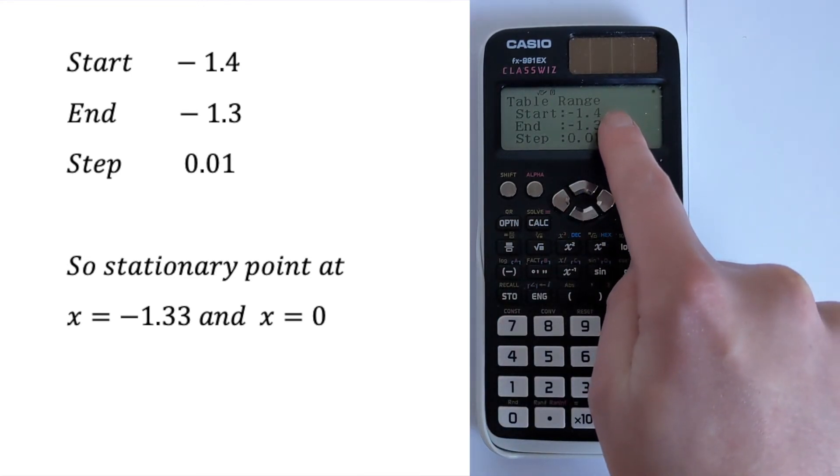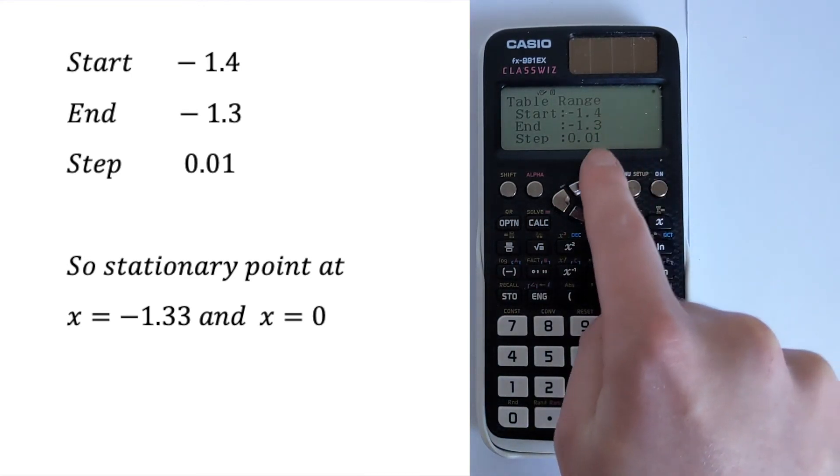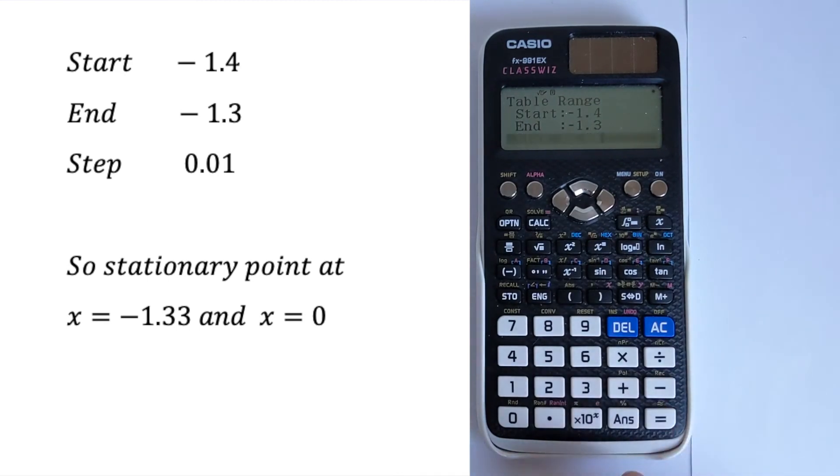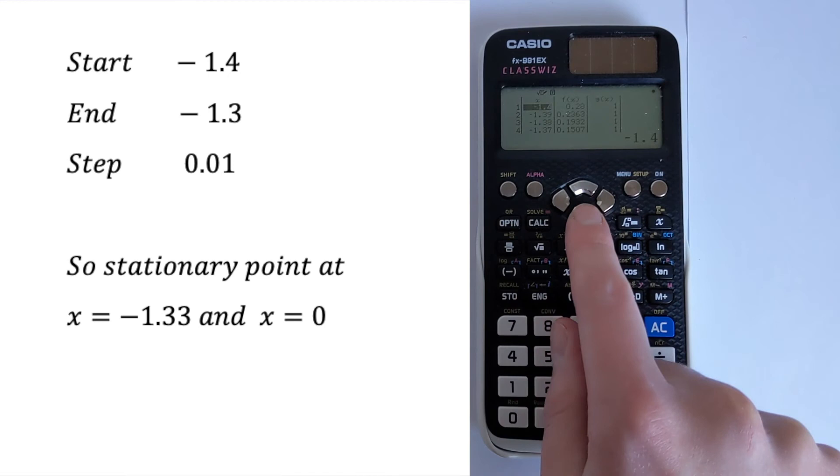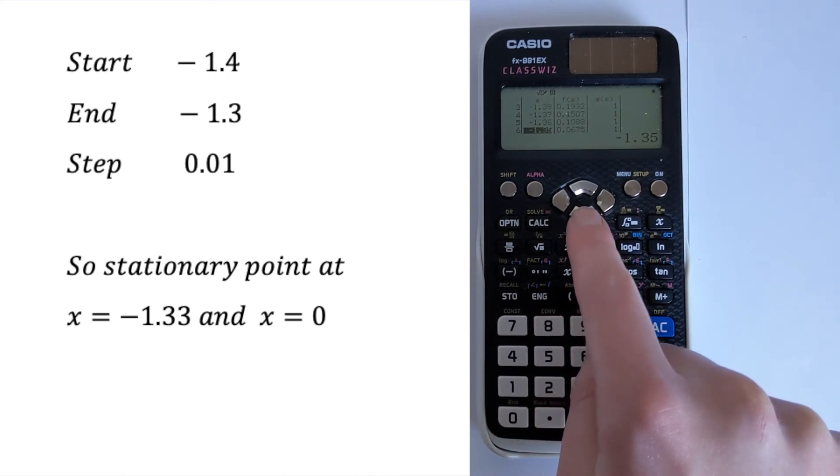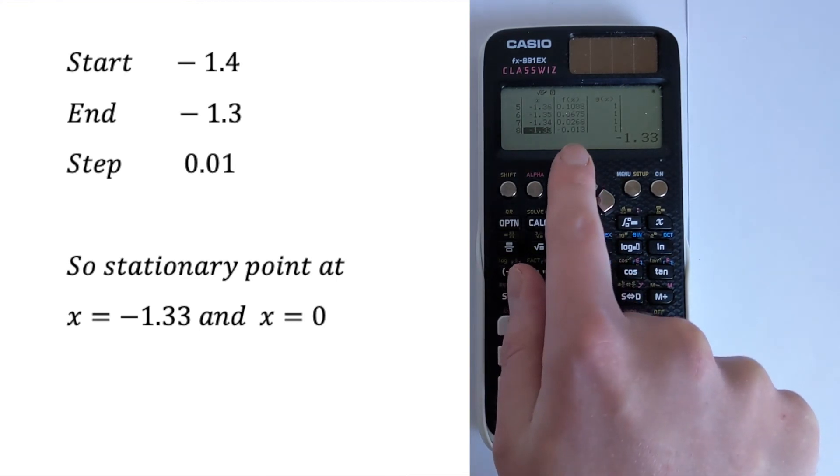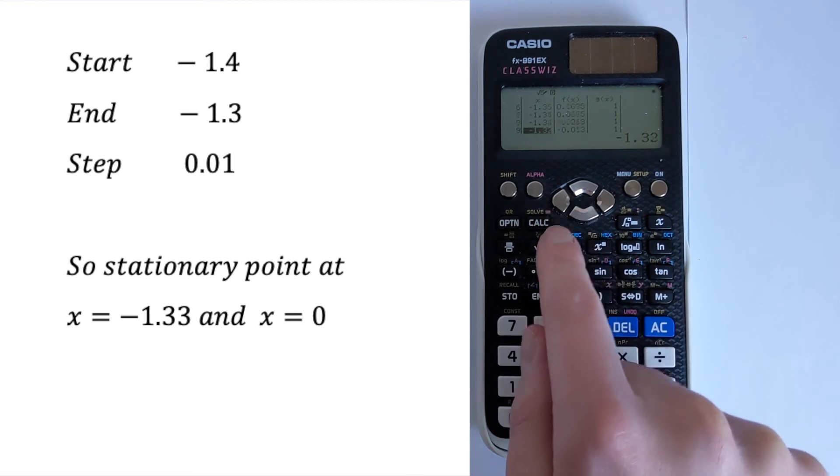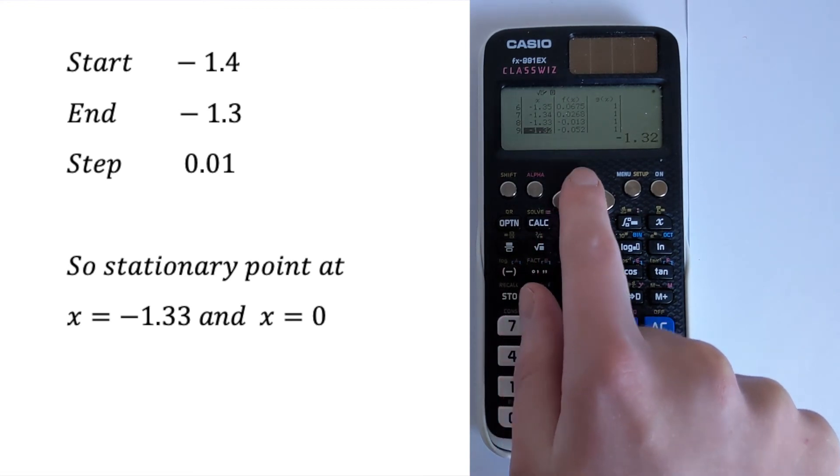So we're going to look at all the values between -1.4 and -1.3, going up in 0.01. So equals and then equals again. So we get the table again. And again, we're looking for that change of sign. So we're still in positive numbers, still in positive numbers, and we switch there to a minus. And then if we go down another one, we've got a minus, even smaller one.